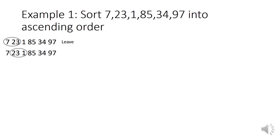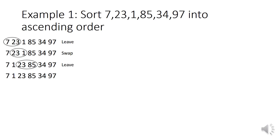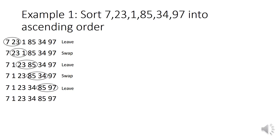Now we're going to look at 23 and 1. This time they are not in ascending order so they are unsorted, and hence we will write swap. When we rewrite it we have swapped 1 and 23. The next pair of values 23 and 85 is already ordered so we will leave them how they are. But 85 and 34 are not in order — they are unsorted — so we will have to swap them. The last values 85 and 97 are ordered so we will leave them how they are. That is the end of the first pass.